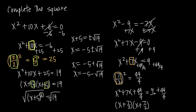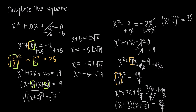On the right-hand side, we have 9 over 1 plus 49 over 4. Finding a common denominator, we multiply 9 over 1 by 4 over 4 to get 36 over 4. Then 36 over 4 plus 49 over 4 equals 85 over 4. So we can rewrite the equation as quantity x plus 7 halves squared equals 85 over 4.